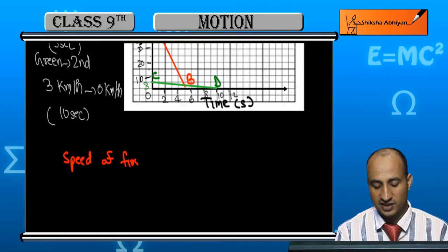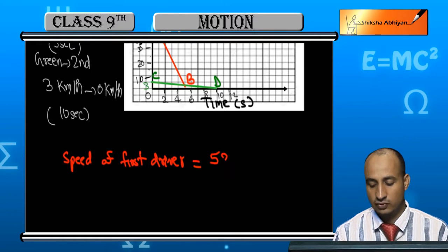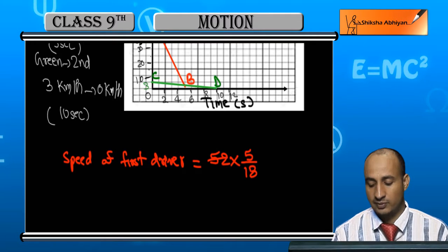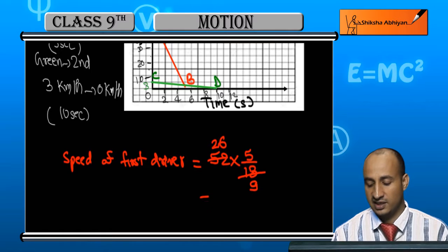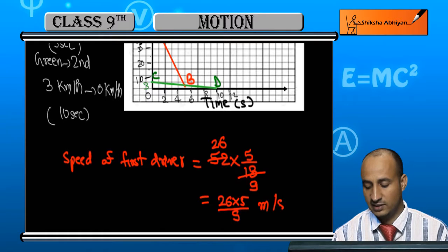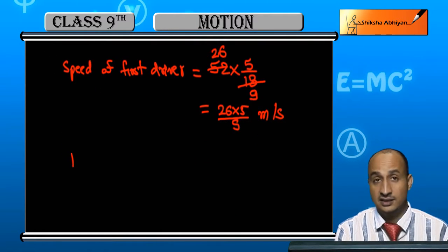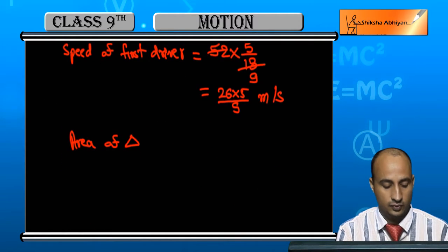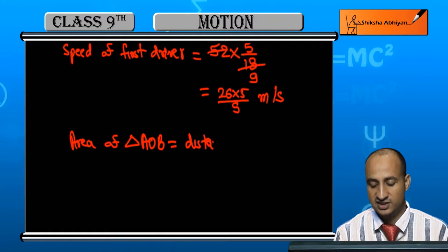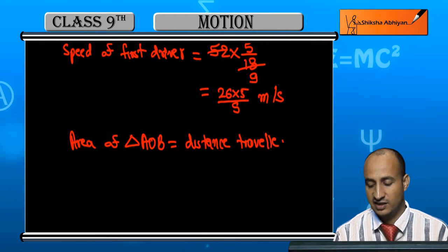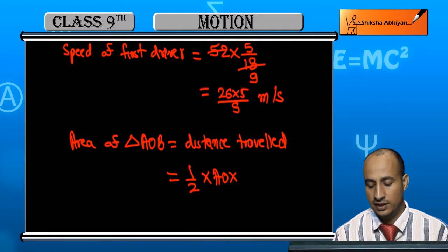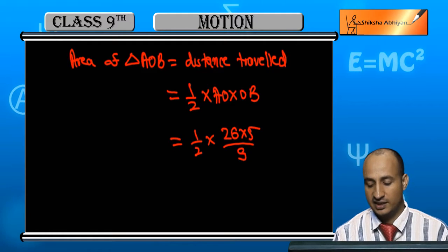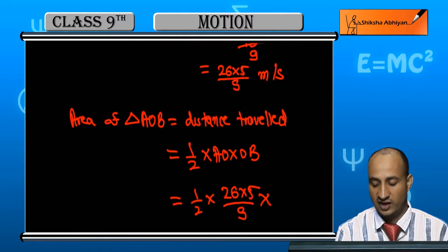The speed of the first driver is 52 km per hour, which I will convert to meters per second. The distance traveled after braking equals the area of triangle AOB, which is equal to half times AO times OB. AO is 52 km per hour — we convert using 5 by 9 — and OB is 5 seconds. So this gives us 26 multiplied by 5 by 9.